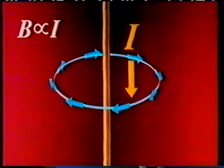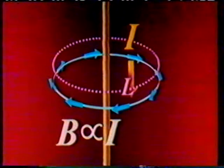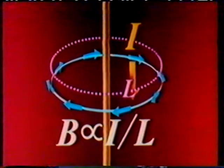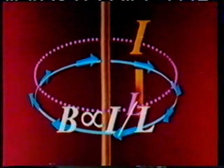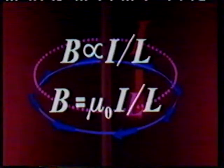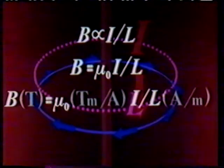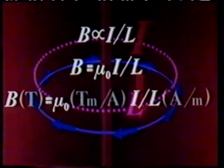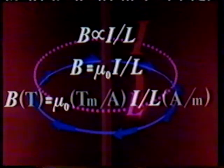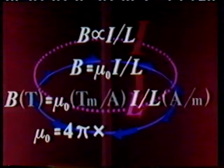Denoting the circumference of the circle by L, the formula for magnetic induction can be extended: B is proportional to I over L. This relationship can be rewritten by adding a proportionality constant denoted by the symbol mu0. In this formula, B, the magnetic induction, is expressed in Teslas, and I over L in amperes per meter. Therefore, the dimension of mu0 must be Tesla·meters per ampere, and its numerical value is found to be 4π × 10⁻⁷.